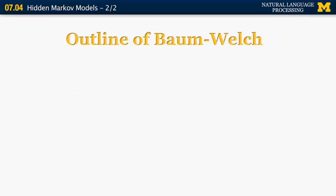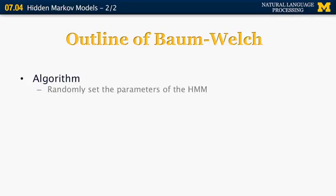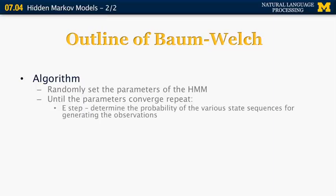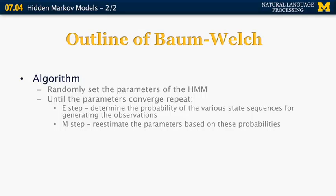I'm only going to go through an outline of Baum-Welch. We initially set all the parameters of the HMM to random values — in our case, around 12 different parameters. Then we perform a set of steps until the parameters converge: the E-step and the M-step. The E-step, or expectation step, determines the probability of the various state sequences for generating the observations. The M-step, or maximization step, re-estimates the parameters based on the probabilities computed in the E-step. Very often, the parameters converge in a small number of iterations — probably a few dozen or even less.